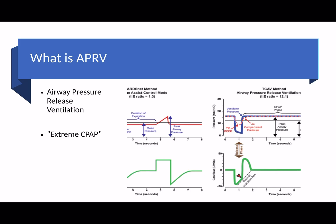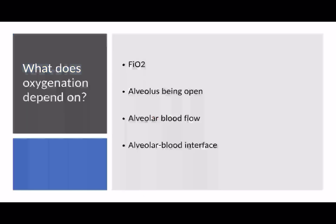APRV is just a fancy way of saying essentially extreme CPAP. What we're trying to do is keep the lungs open for as long as possible by using a high pressure for a long period of time to maintain oxygenation and to recruit as many alveoli as possible. Oxygenation depends on the fractional inspired concentration of oxygen and that the alveoli remain open — the longer the alveoli are open, the more oxygen will diffuse into the capillaries.